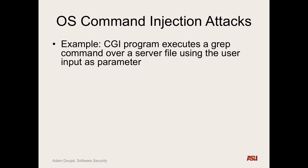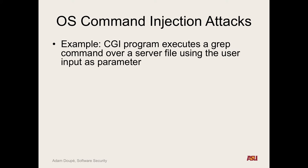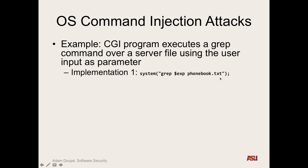Let's look at an example. Say we have a CGI web application that does a grep over some server file using user input as the parameter — for instance, grep for an expression in phonebook.txt. When we come across this code, what attacks could we leverage?